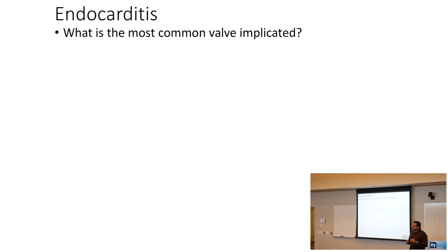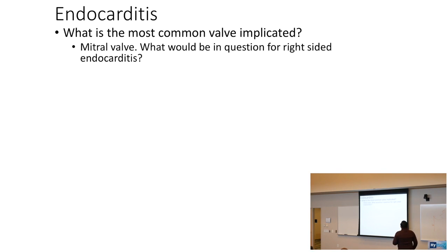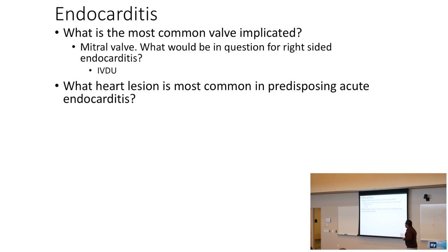The most common valve implicated in endocarditis is the mitral valve. For right-sided endocarditis on your USMLE, you will have a patient with IV drug abuse. The most common heart lesion predisposing to acute endocarditis is mitral valve prolapse.